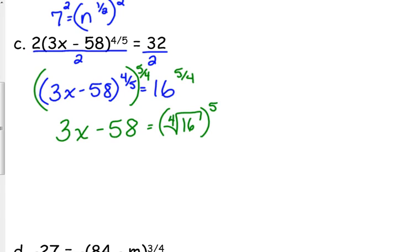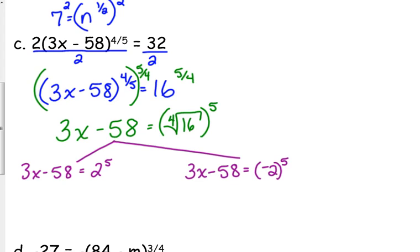So we're actually going to get two solutions out of this equation right here. So we've got 3x minus 58 is equal to positive 2 to the fifth, and we have 3x minus 58 is equal to negative 2 raised to the fifth. So let's solve one at a time. 2 to the fifth is 32. Add 58. So we get 3x is equal to 90 divided by 3, x is equal to 30 is one of our solutions.